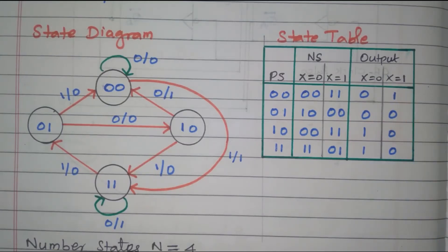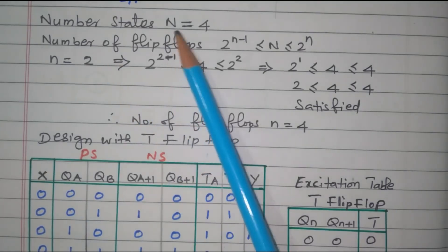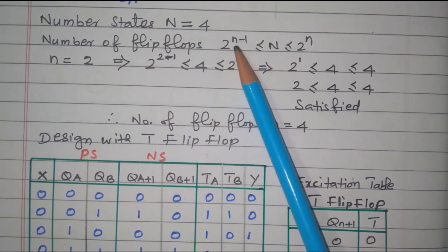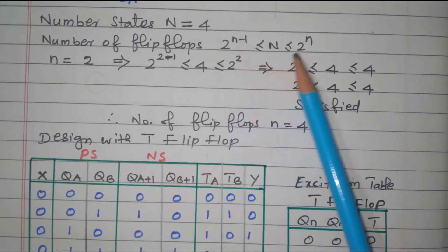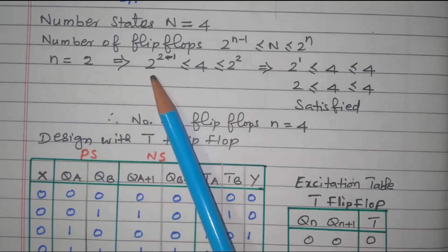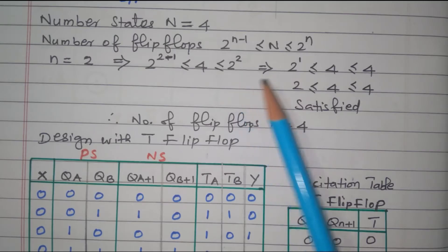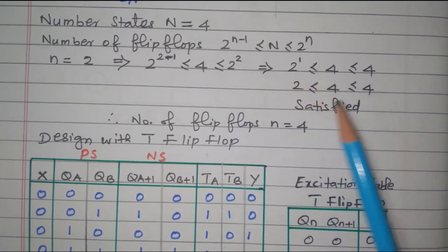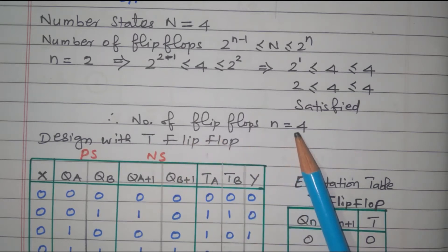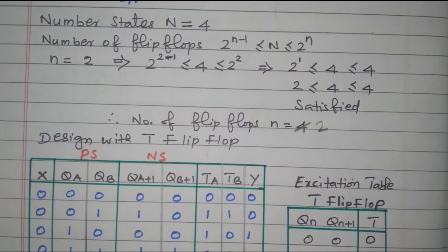Now we need to design the T flip-flop. First we identify how many flip-flops are required. The number of states N=4. The number of flip-flops n is found from: 2^(n-1) < N ≤ 2^n. Substituting n=2: 2^1 ≤ 4 ≤ 2^2, i.e., 2 ≤ 4 ≤ 4. This condition is satisfied, so the number of flip-flops n=2.